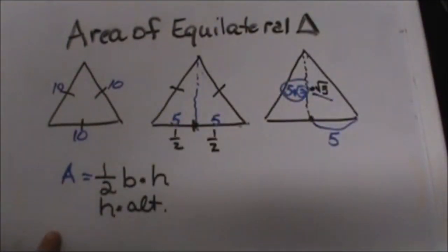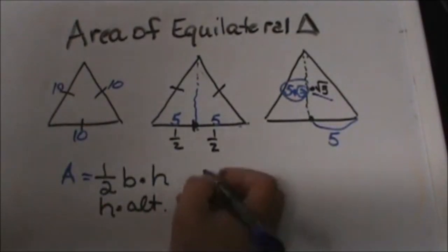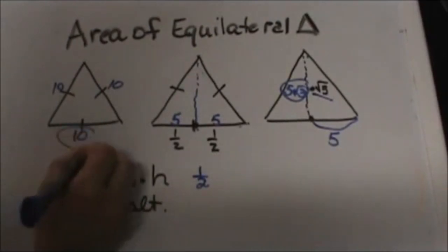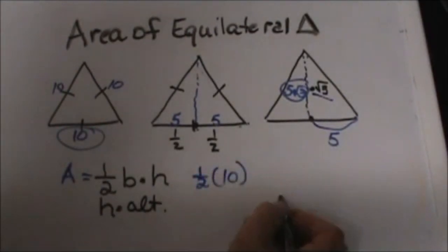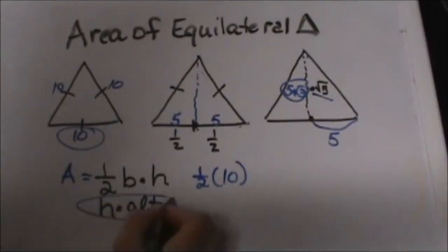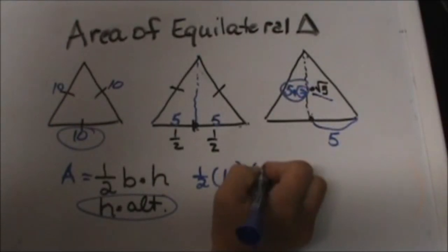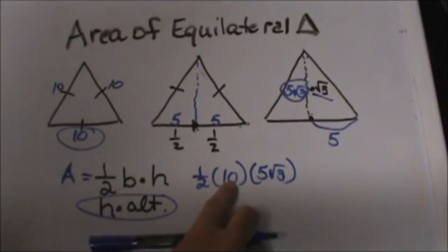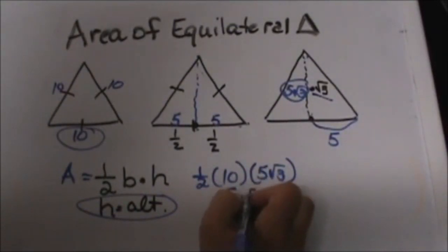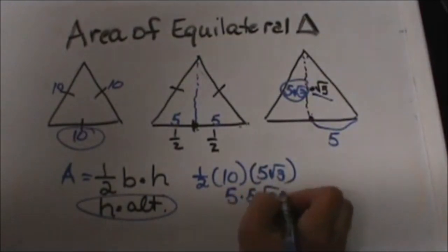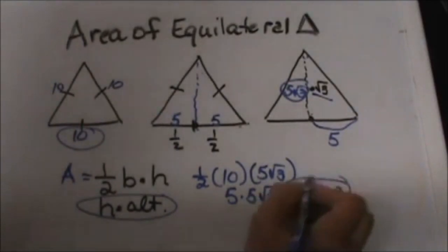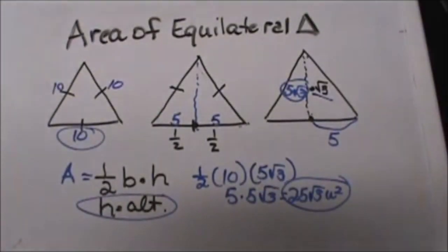Now I'm going to plug those into the formula. To find the area: one half the base — the base is 10 — times the height, and we just figured out the altitude is 5√3. So we take ½ × 10 × 5√3. Half of 10 is 5, and 5 times 5 times √3 is 25√3 square units. And that is how you find the area of an equilateral triangle.